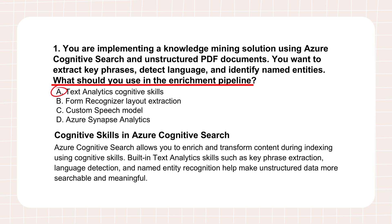Why are text analytics skills the right fit for pulling insights like key phrases and entities out of PDFs in the search pipeline? Fundamentally, these skills are built for understanding text using sophisticated natural language processing — NLP. They can do key phrase extraction to find the main themes, automatically detect the language (super useful if you have documents in different languages), and then there's named entity recognition — pulling out people, places, organizations. The really neat part is how it fits into the enrichment pipeline: a series of steps that process your documents before they get fully indexed for search, adding a layer of AI understanding right at the start. You enrich the data first, making the final search way more powerful.